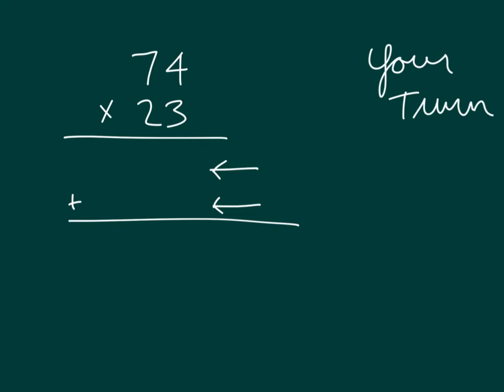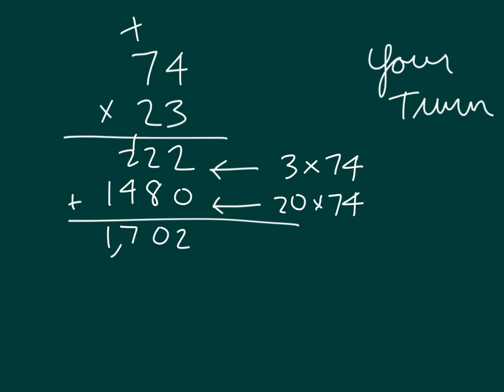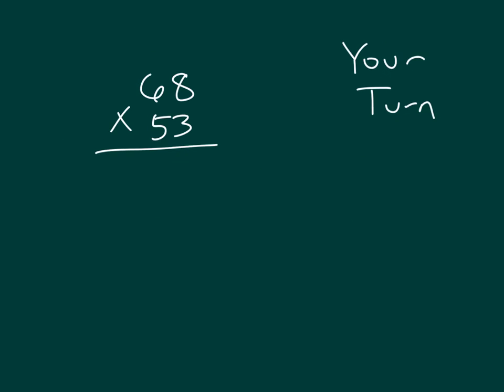First is 3 times that 74. Next, you have that 20 times the 74, and of course you add it. Did you figure out your partial products correctly? Did you remember to place the 0 because you are working with two tens? The product there is 1,702. 74 times 23 equals 1,702. Look over your work.